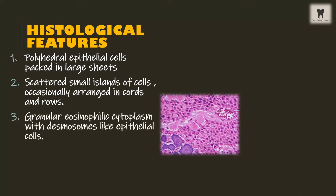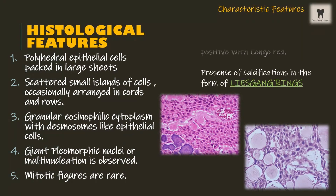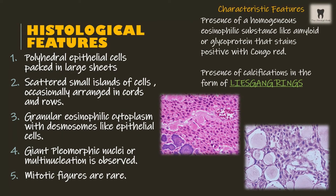In the histological slide, there are polyhedral epithelial cells packed in large sheets, scattered small islands of cells occasionally arranged in cords and rows. Cells show granular eosinophilic cytoplasm with desmosome-like connections. Giant pleomorphic nuclei or multinucleation is observed, and mitotic figures are rare.